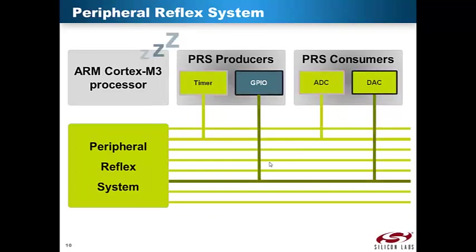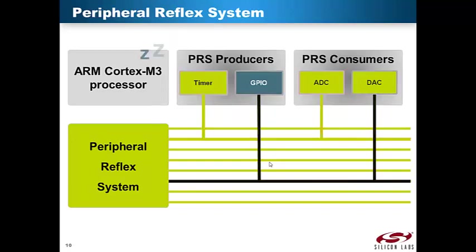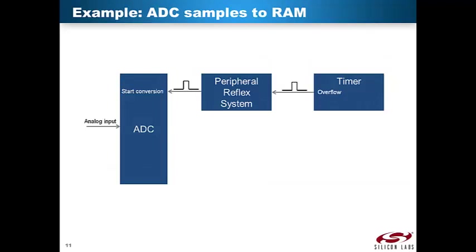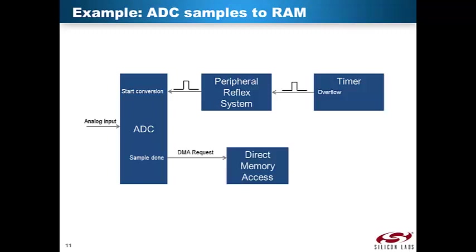Let us take a closer look at how PRS is used to trigger periodic A-to-D conversions while the EFM32 is in Energy Mode 1. The timer peripheral is selected as producer on one of the PRS channels. The timer is set up to count forever and wrap around each time it overflows. On every overflow, a PRS trigger pulse is generated. The A-to-D converter is configured to perform one sample of a single channel when triggered by PRS. PRS can also trigger a scan mode conversion, where a pre-configured set of channels are sampled. This example also shows that the DMA can be used to store the sample data in memory. It is important to understand that data transfers are not part of the Peripheral Reflex System, but DMA can be a very useful complement to PRS when data transfers are required.